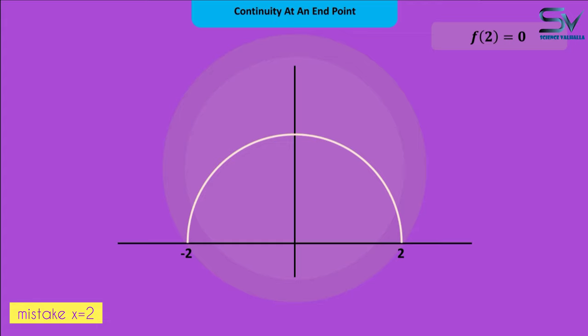At c equals 2, the left limit is 0. We would say that this function is left continuous at x equals 2 because we could only find the left limit here.